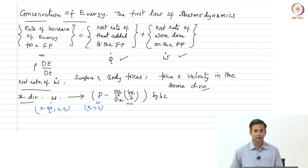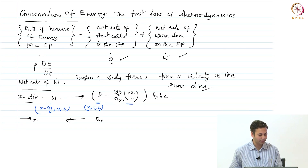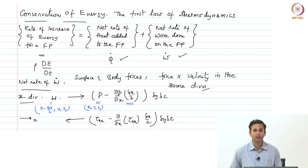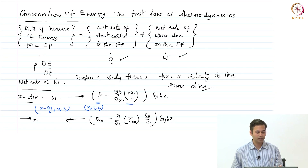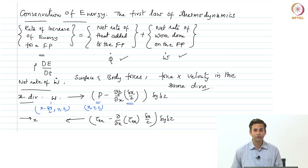On the west face we also had tau_xx, acting in the negative x direction, given by tau_xx minus (∂tau_xx/∂x)(δx/2). Multiplying by the area δy·δz gives the force in the x direction on the west face. To calculate the rate of work done, we multiply these forces by the velocity u in that direction.